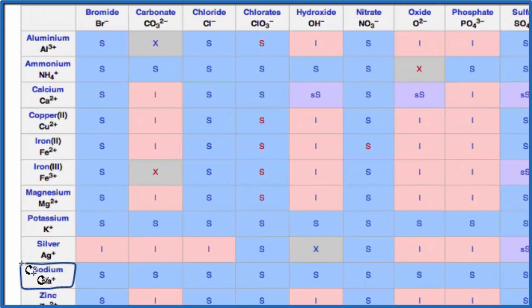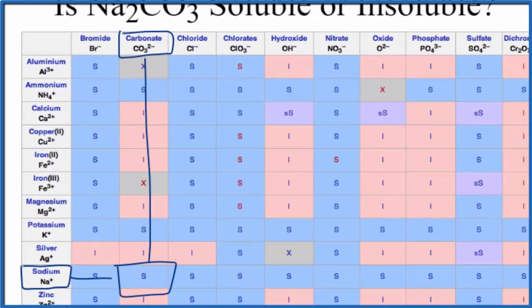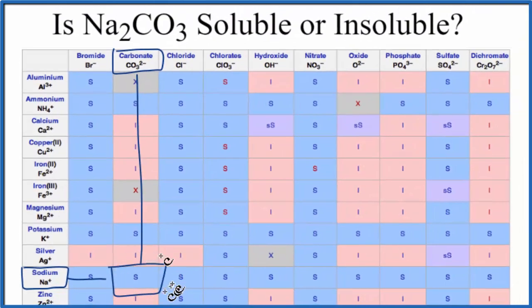Then we'll find carbonate, CO3, and right here, carbonate CO3 2-. So we go over, we go down, and we can see that S right there. That S tells us that sodium carbonate is going to be soluble in water.